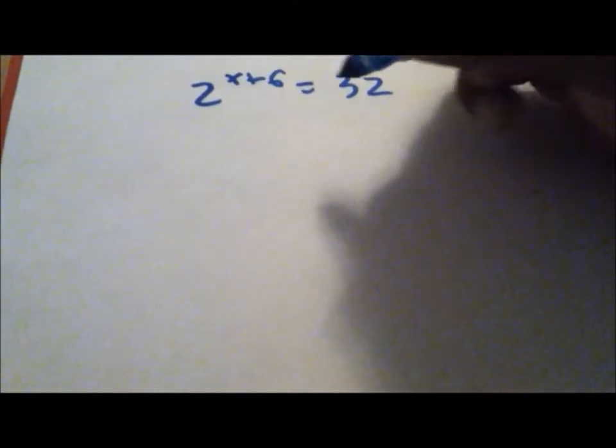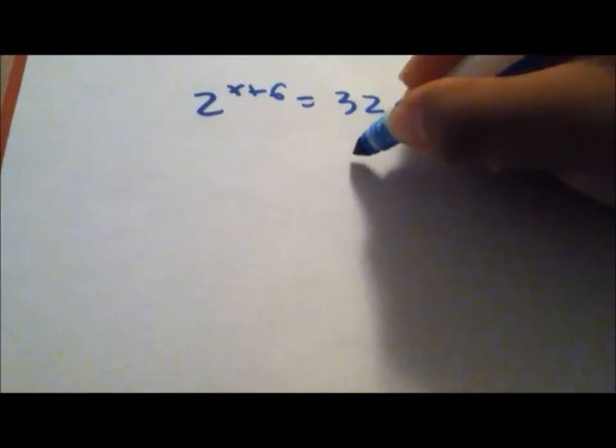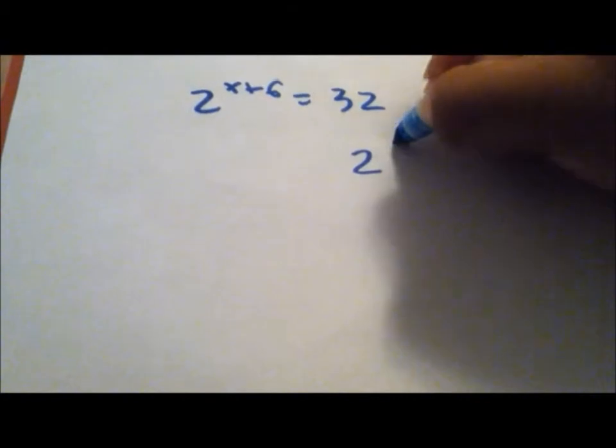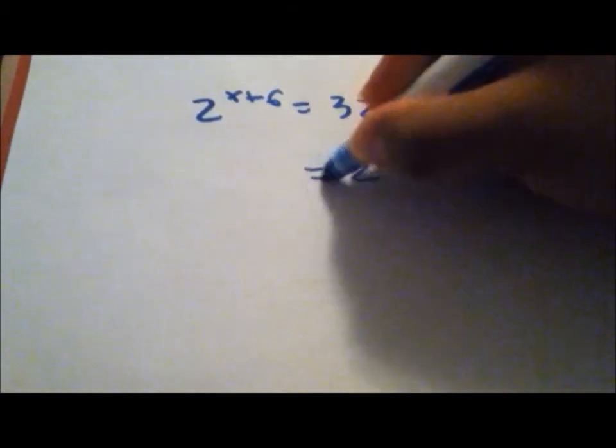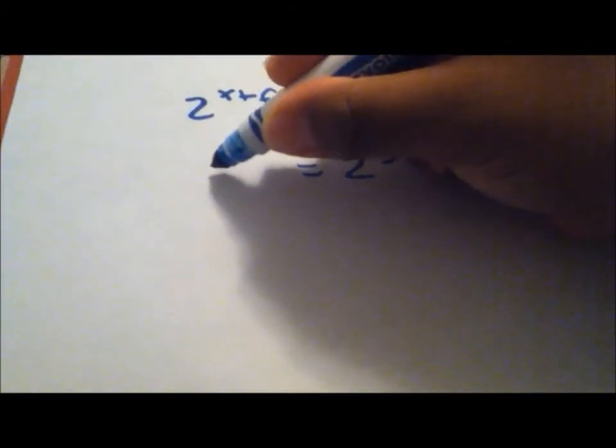Since we need to have equal bases, we can convert 32 to 2 to the 5th power and keep 2 to the x plus 6th power the same.